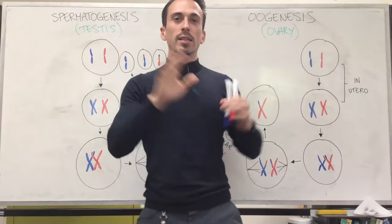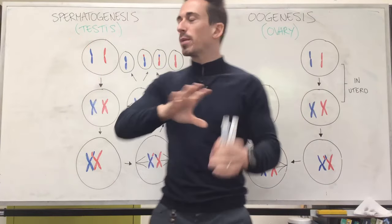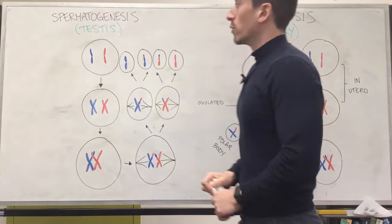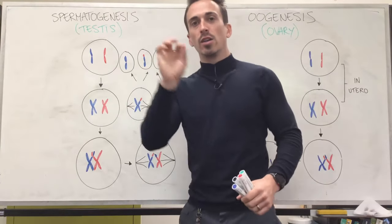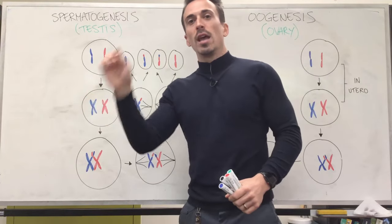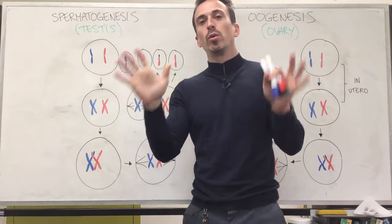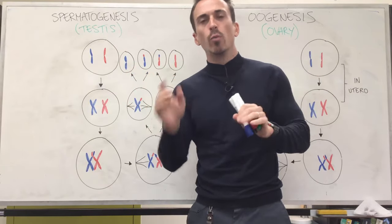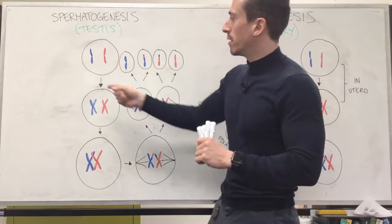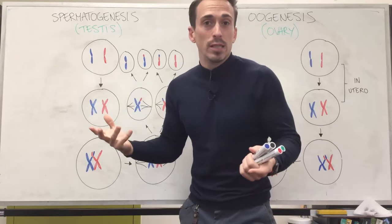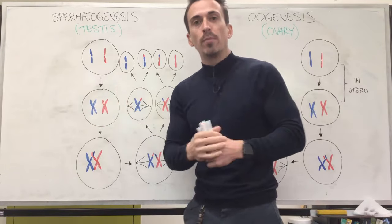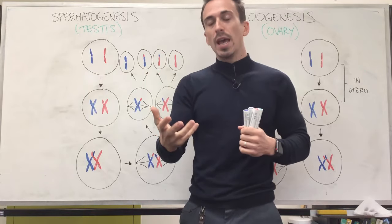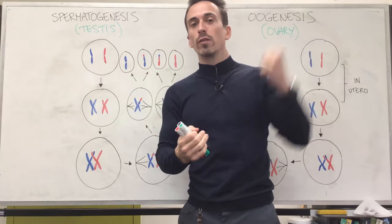These processes are very similar. We're going to begin with the males because it's going to be simpler, and it is. Within the testes of males they will have multiple cells — basically like stem cells called spermatogonia — and what these cells have inside of them is the genetic material of that individual. Remember, all your DNA is wrapped up in things called chromosomes.